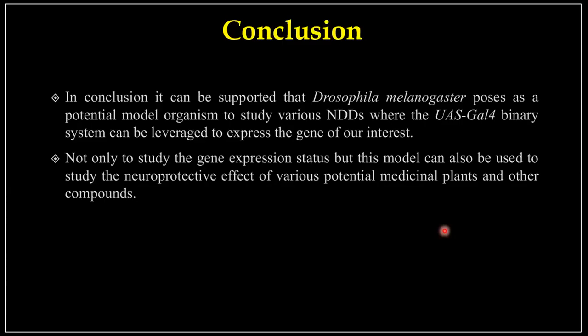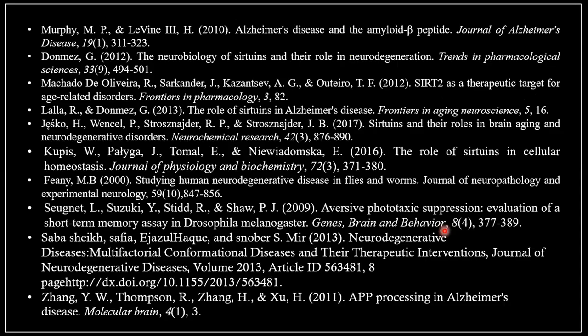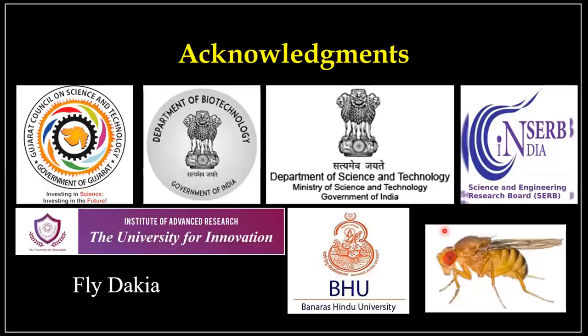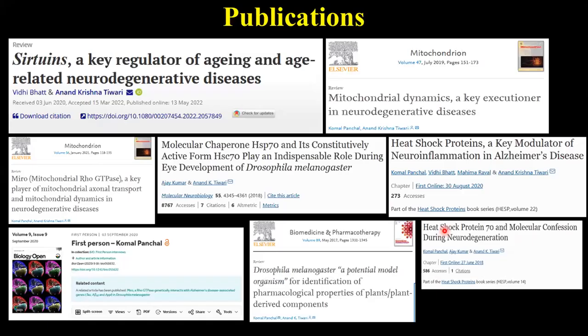In conclusion, Drosophila melanogaster serves as a potential model organism to study various neurodegenerative diseases. We can leverage the UAS-GAL4 binary system for expressing genes of interest, conduct gene expression studies, and evaluate the neuroprotective effects of medicinal plants, compounds, and novel genes. Acknowledgements go to KSCST, DBT, DST, SERB, Banaras Hindu University, FlyBase, Institute of Advanced Research, and Drosophila melanogaster itself. Thank you, and I am open for questions.